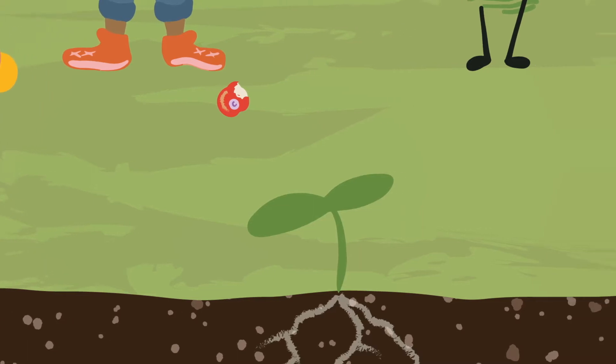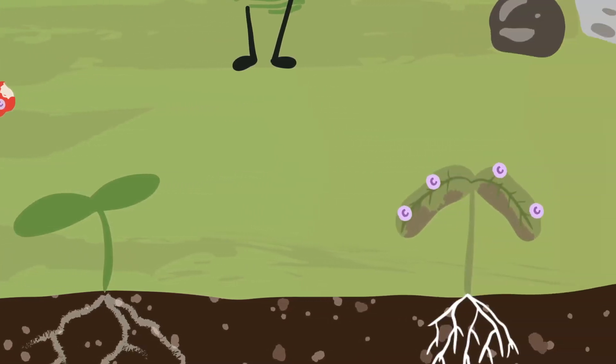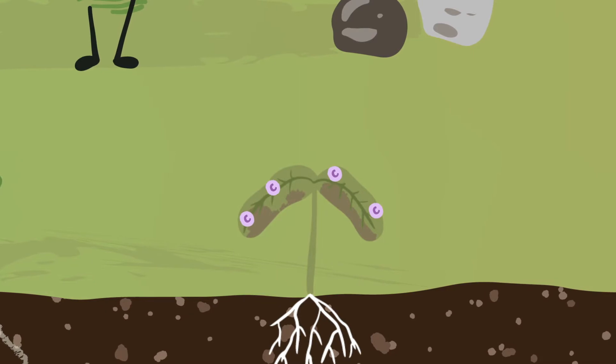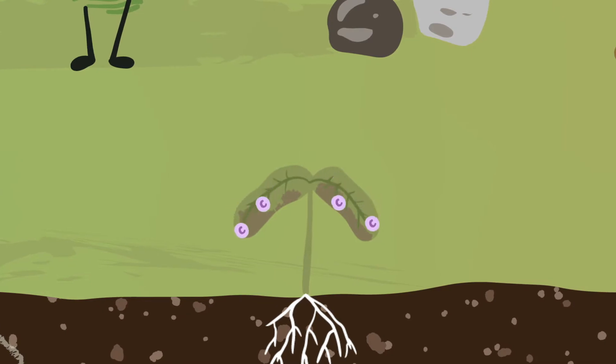When plants die and fruits and vegetables rot, they turn into organic matter and their carbon stays buried in the soil. This is called storing carbon in the soil.